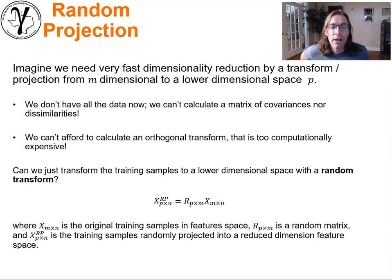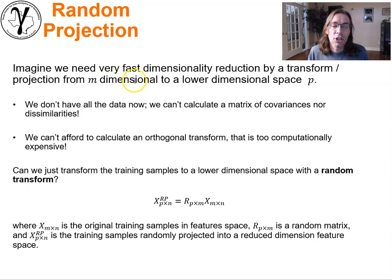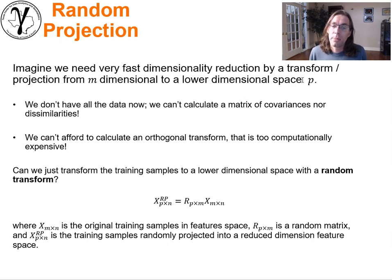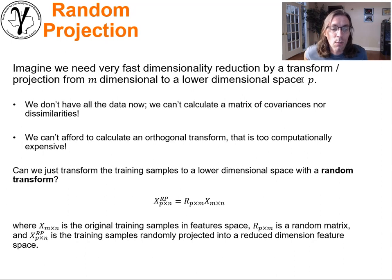Let's set up the problem. Imagine we have to work in a very fast manner. We want to do dimensionality reduction by a transform — a projection from M-dimensional to a lower dimensional space P. The main constraint is we may not have all of the data available to us right now, so we can't calculate up front the covariance matrix nor dissimilarities between all the possible pairs. This would happen if we were working with real-time data being fed to us. We can't adapt to the data. Also, we might be in a situation where we can't afford to calculate an orthogonal transformation — it's just too expensive.